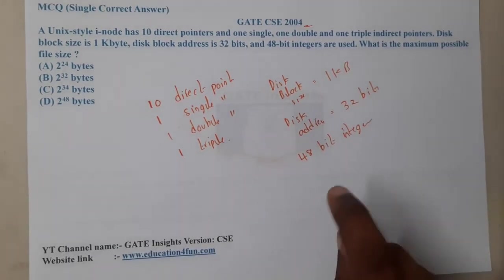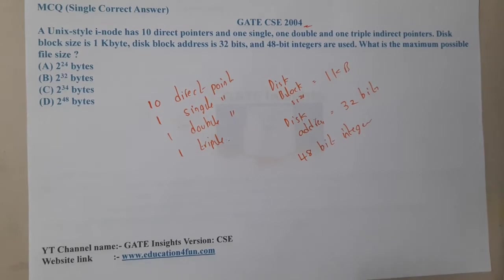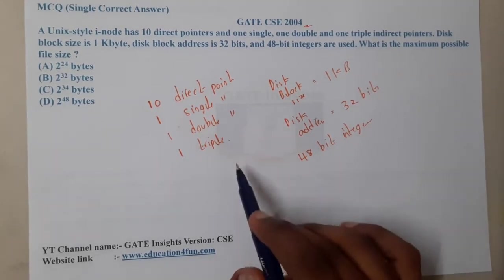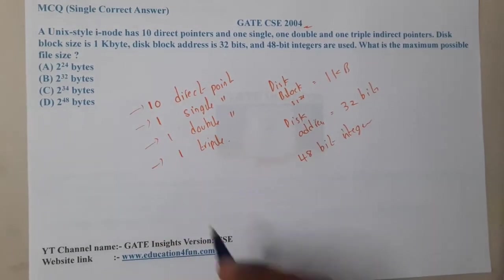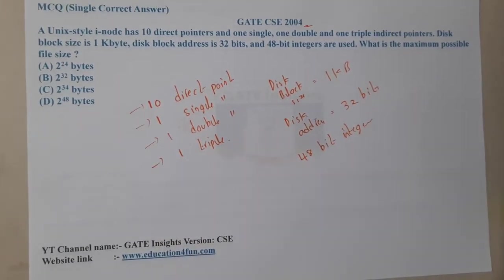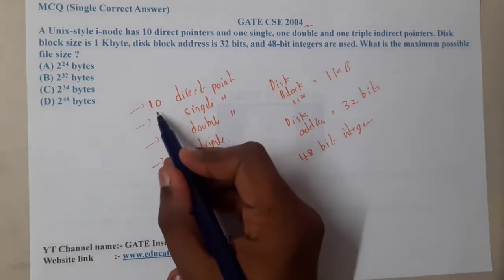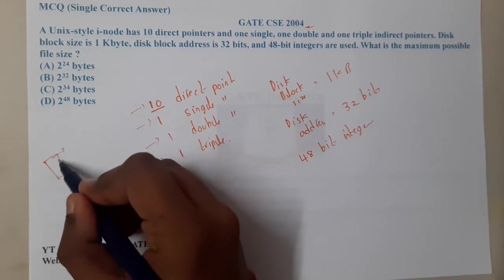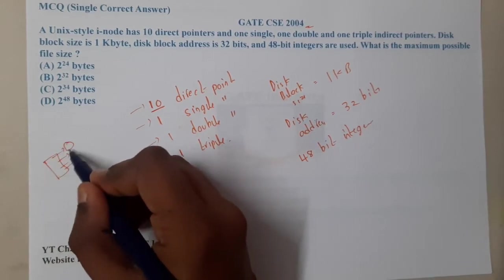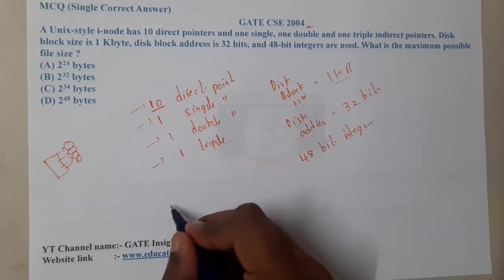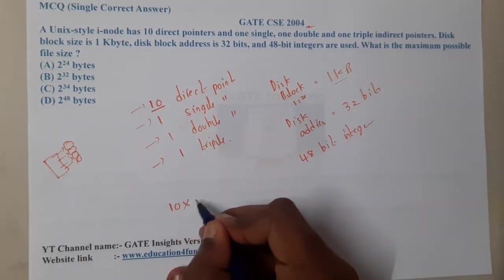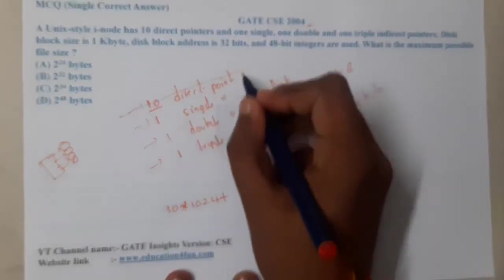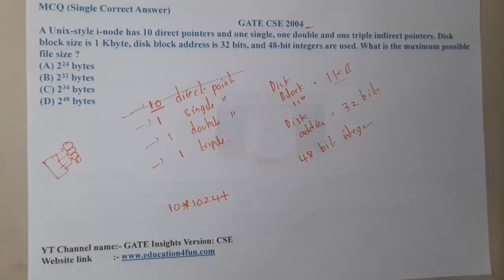We have 10 direct pointers, one single indirect, one double indirect, and one triple indirect. Each disk block size is 1 KB. The direct pointers point to 10 addresses, each block being 1 KB, so that gives 10 × 1024 bytes.